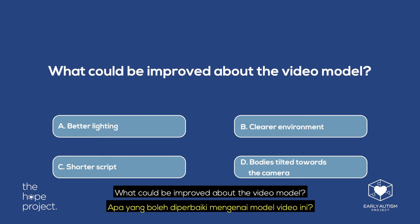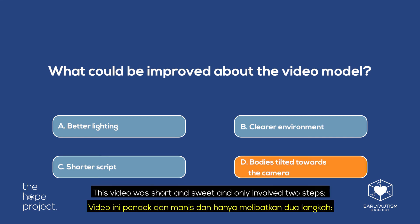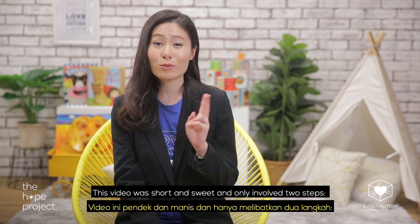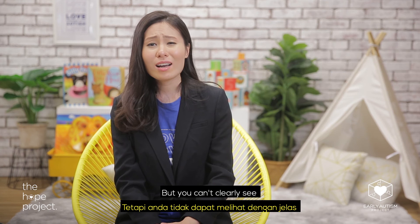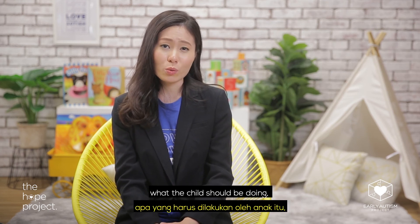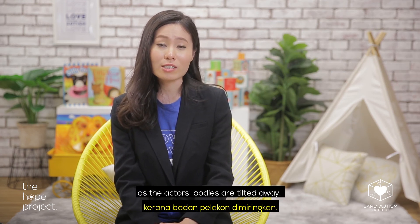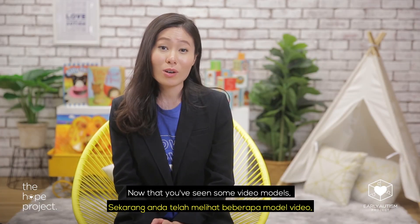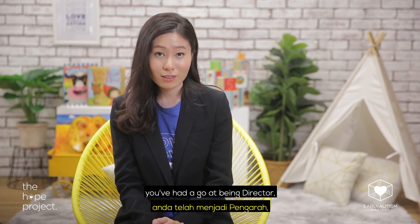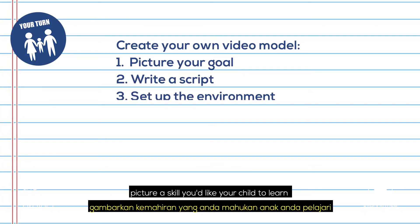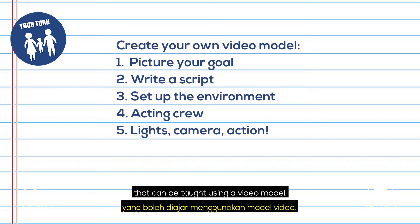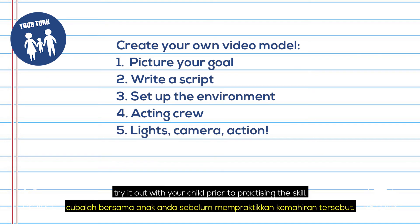What could be improved about the video model? The answer is D. This video was short and sweet and only involved two steps — tap someone on the shoulder and say excuse me — but you can't clearly see what the child should be doing as the actor's bodies are tilted away. Now that you've seen some video models and had a go at being director, it's your turn. Following these steps, picture a skill you'd like your child to learn that can be taught using a video model. Once you've created it, try it out with your child prior to practicing this skill.